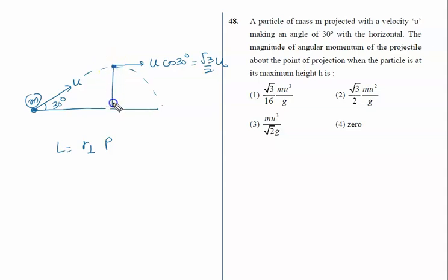This is the perpendicular distance from the axis of rotation. This is the maximum height h_max. We know in projectile motion h_max equals u squared sine squared theta upon 2g. For sine 30 degrees, which is 1 by 2, squared gives 1 by 4. So u squared upon 2g times 1 by 4, that is u squared upon 8g.